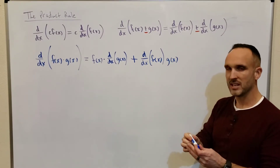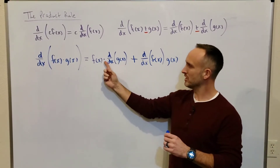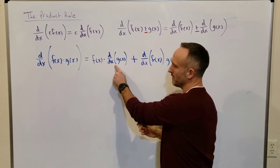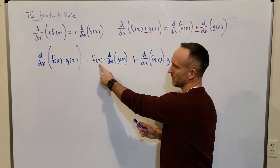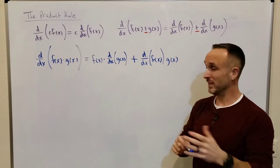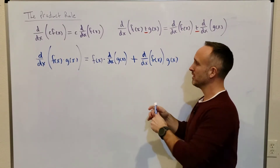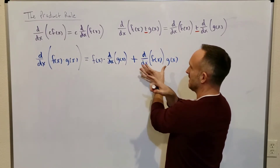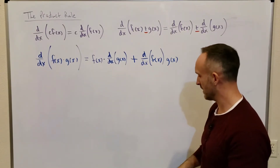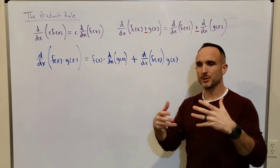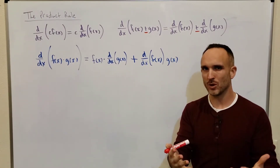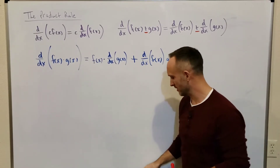The good thing is that multiplication is commutative, so it really doesn't matter what order you multiply these. You could take the derivative of the second function and multiply it by the first. Similarly, a sum is commutative, so you could also switch the order of the summands. So I will fluidly go back and forth switching the order, because you can multiply and add in any order you want.